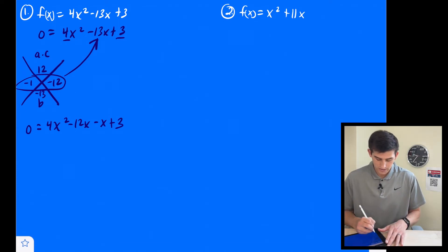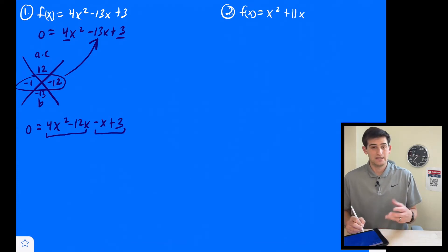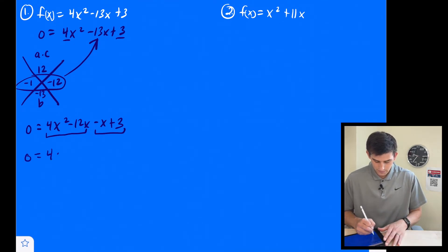Now we can factor by grouping. So I'm going to group together my first two terms and my last two terms, and I'm going to factor out the GCF. So we get 0 = 4x(x - 3).